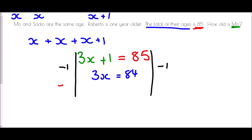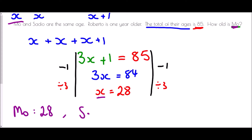To get x on its own I divide by 3, so x = 84 ÷ 3 = 28. The question asked how old is Mo — Mo was x, so Mo is 28. Sadio is also 28. Roberto was one year older, so he is 28 + 1 = 29.